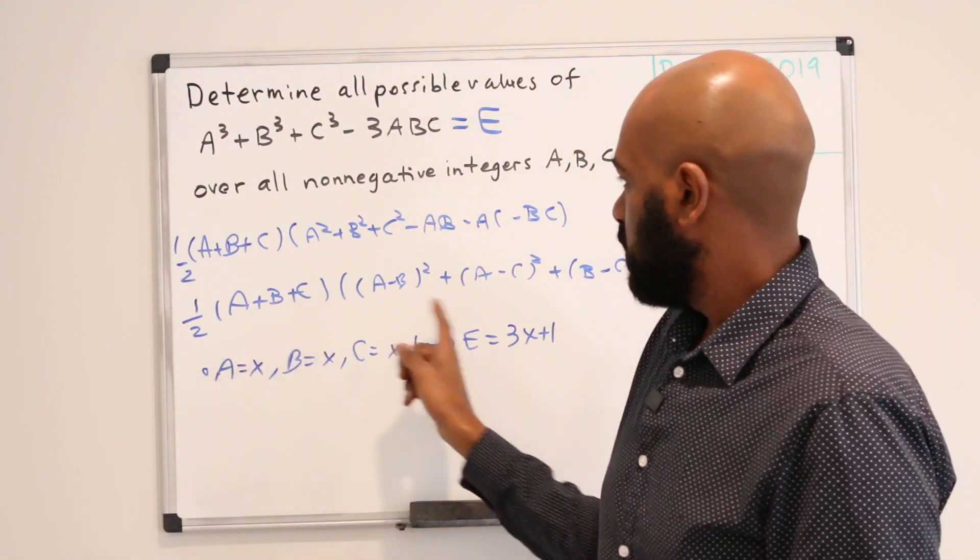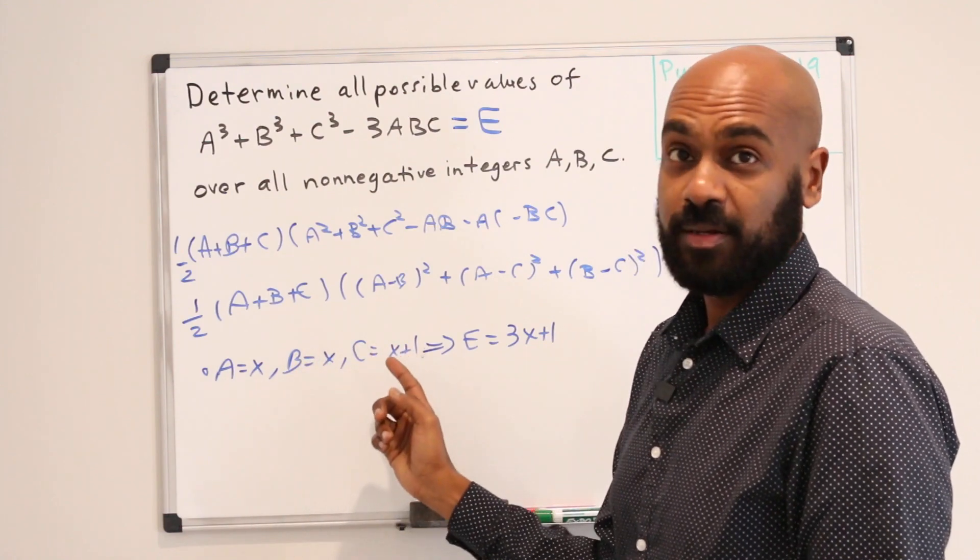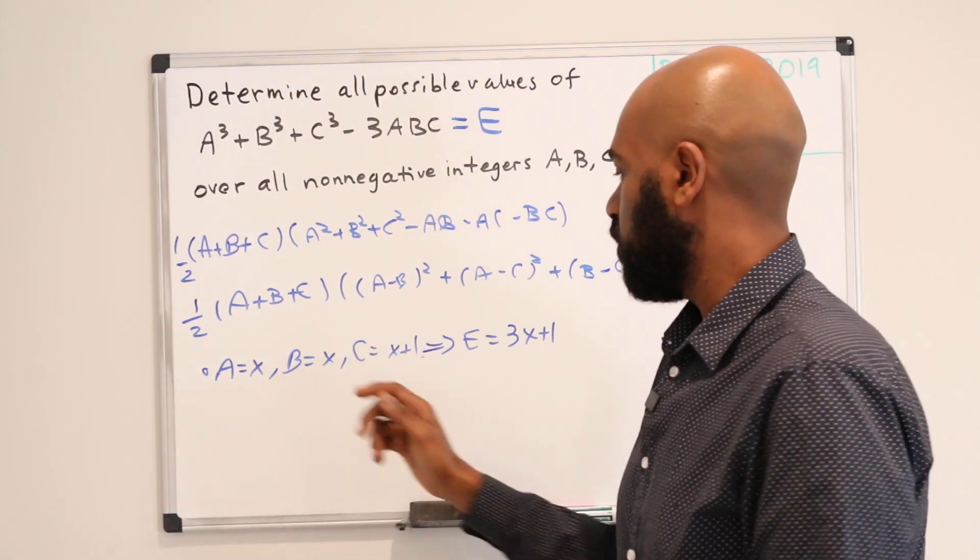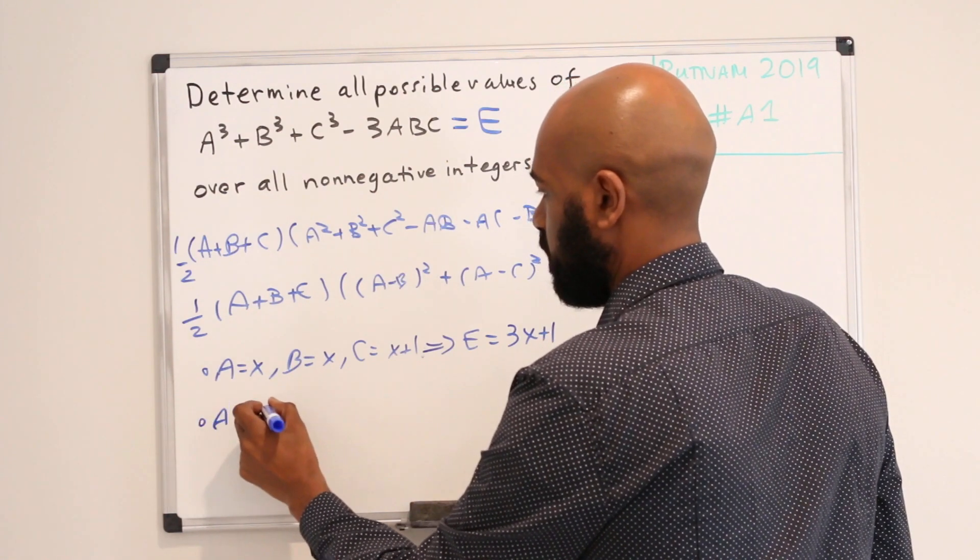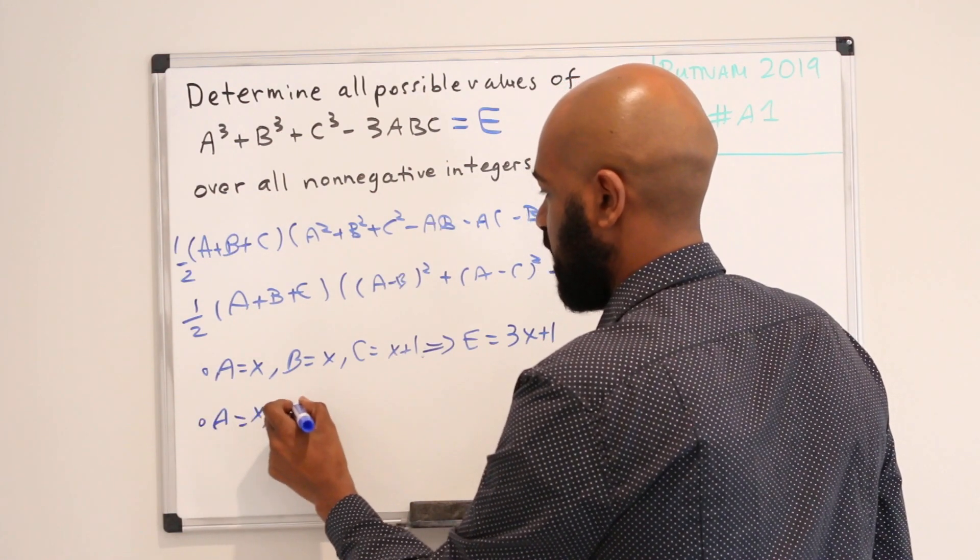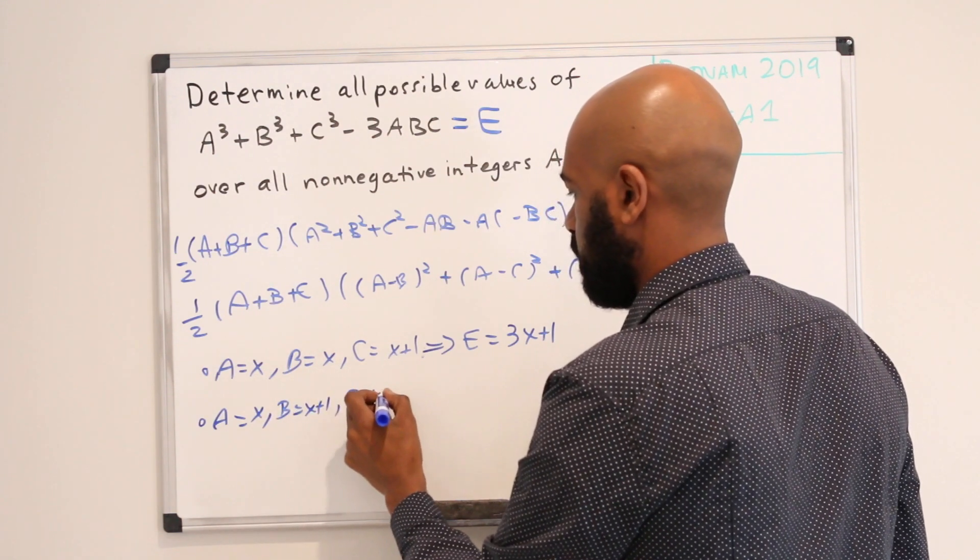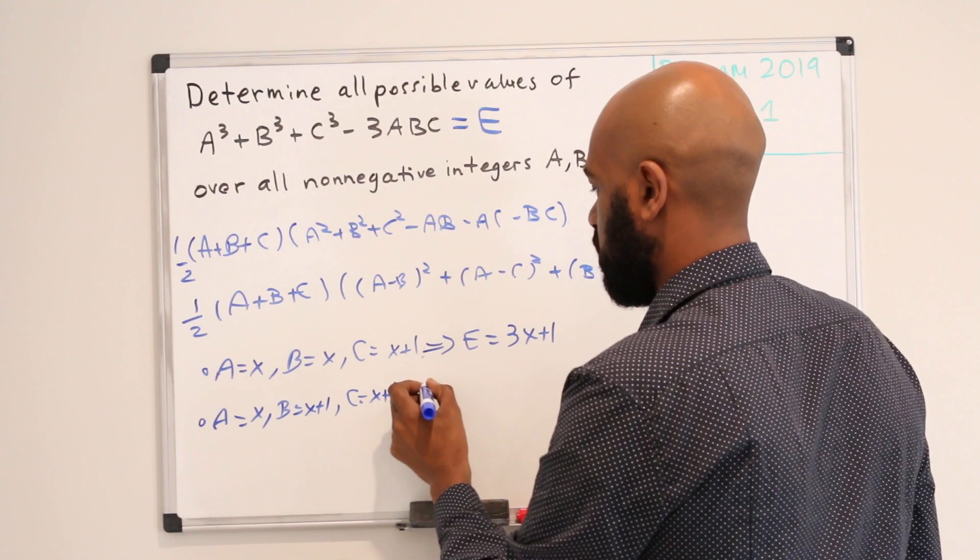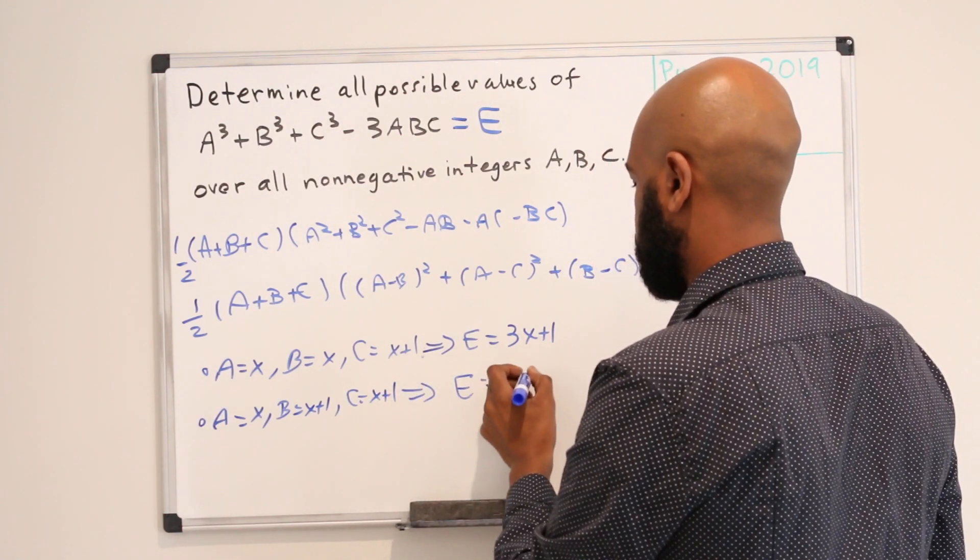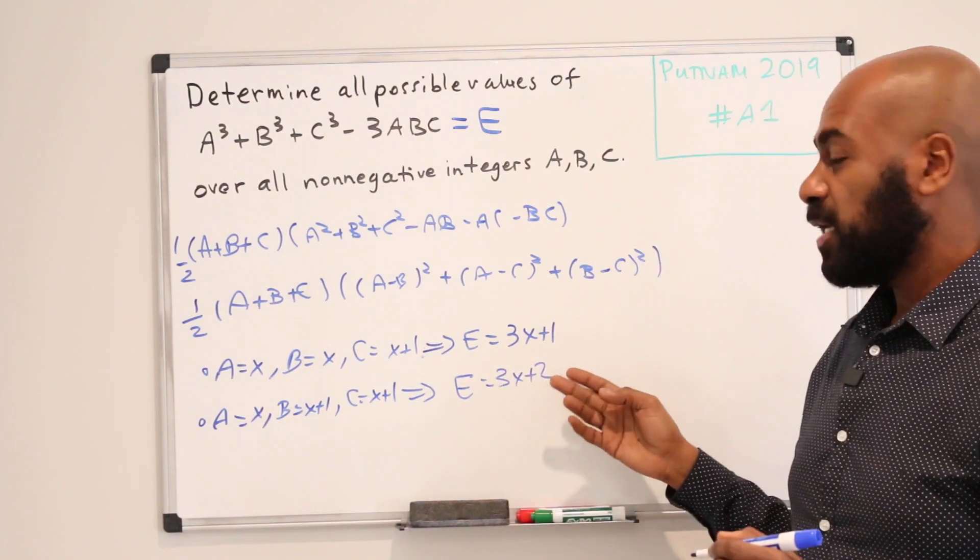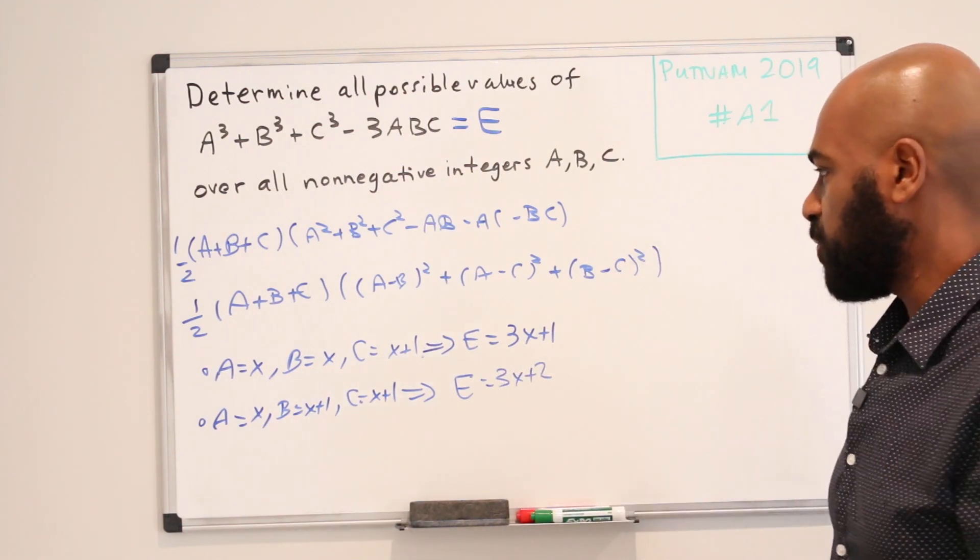Now we did this by making two of these variables the same and 1, 1 different than those two. We can do the same thing by setting A to be X, B to be X + 1, and C to be X + 1. And by the same argument that gives us that E is 3X + 2. And so we get all non-negative integers that leave a remainder of 2 when divided by 3.